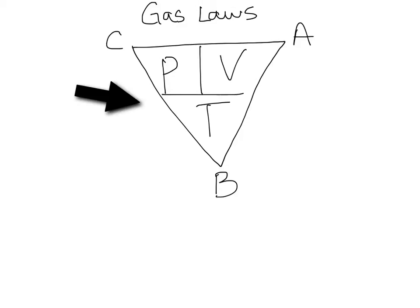This is a quick and easy way to remember which gas law you need to use. You draw the triangle upside down, then you do P, V, and then T on the bottom, and you draw the fraction line and then the line that makes the multiplication.